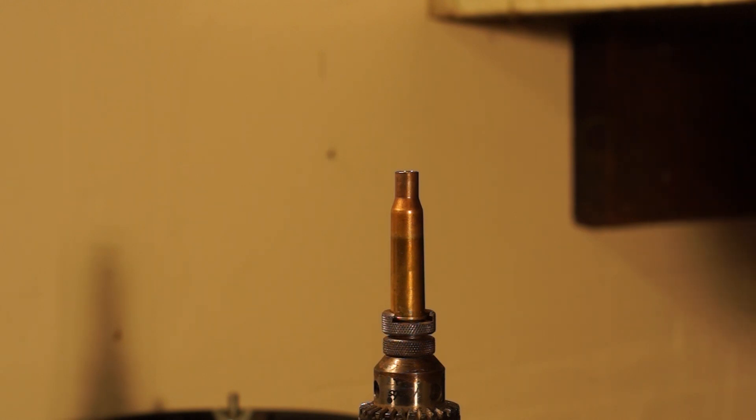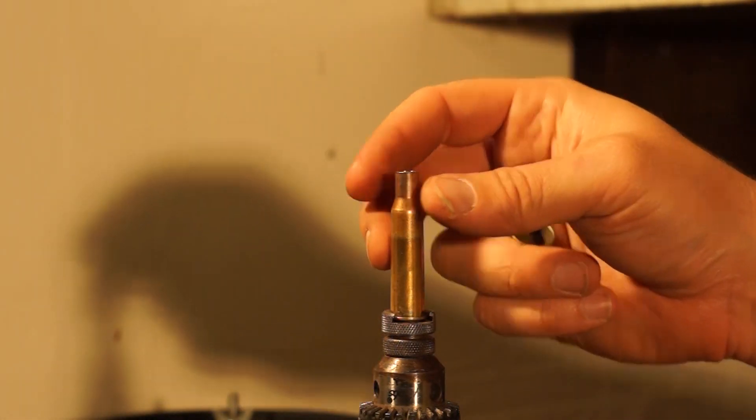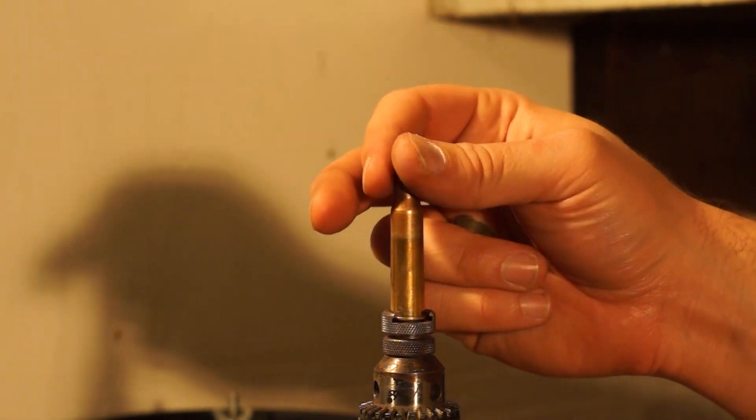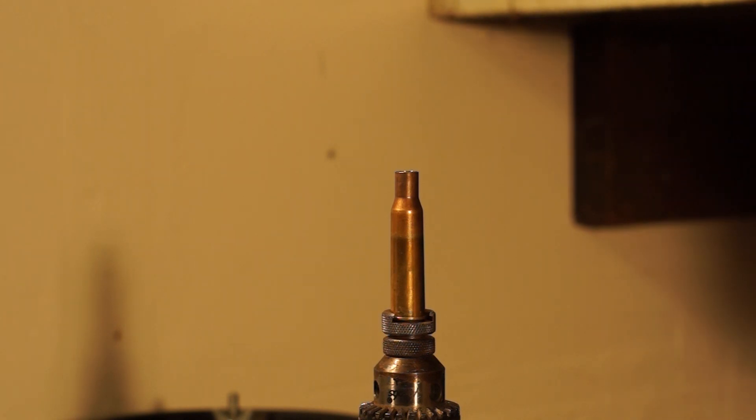And the next step in trimming cases is now that it's trimmed it needs to be chamfered and deburred at the neck. There are burrs on the outside. I can feel them they're sharp. And we need a chamfer on the interior to help in seating the bullet.